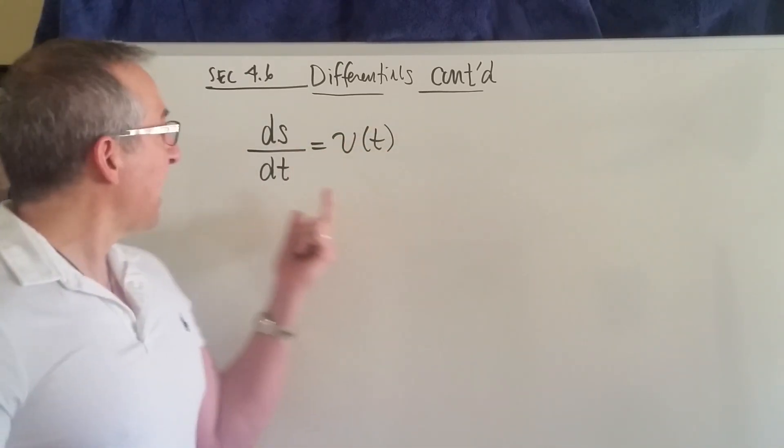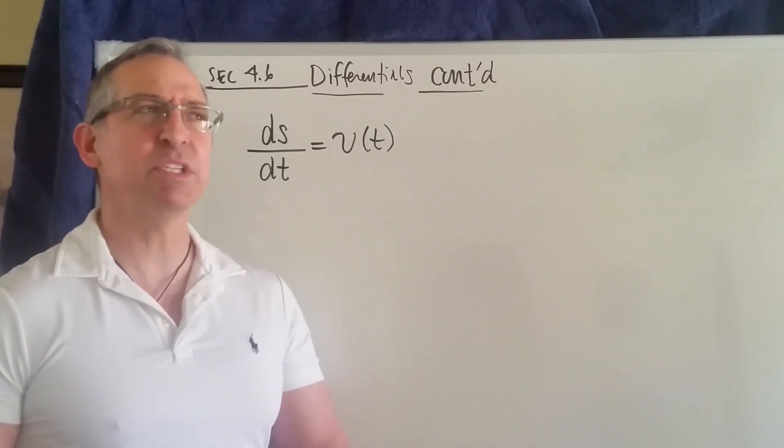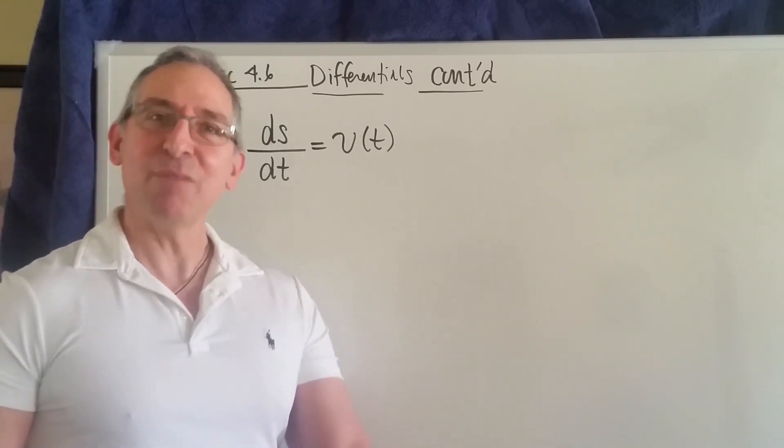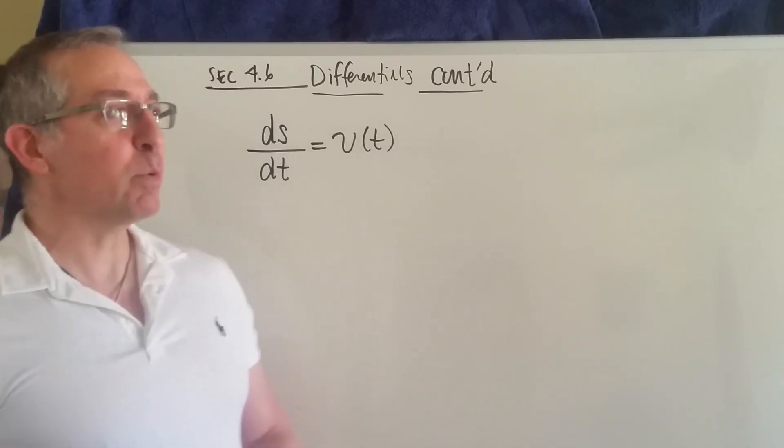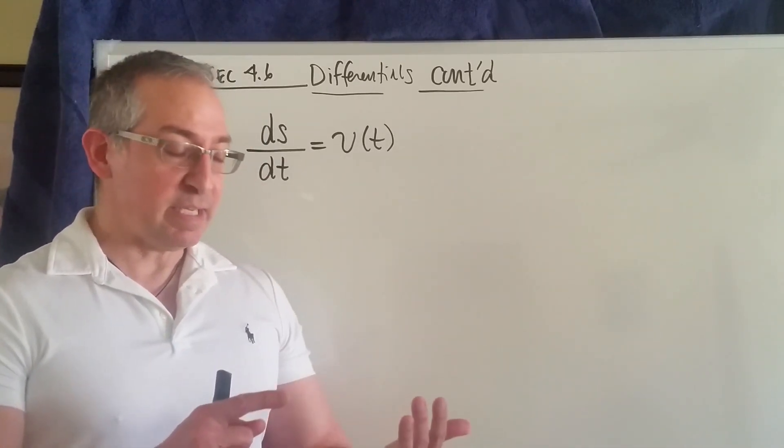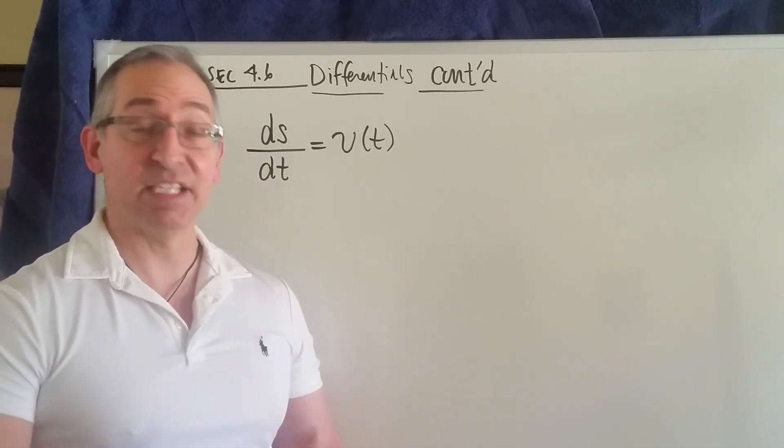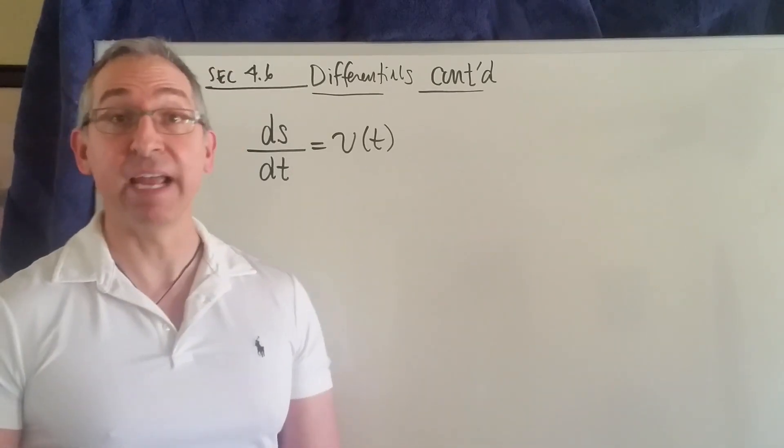Okay, you remember this? That was the time rate of change of the position of an object. Remember, that was back in section 3.6 in our book. That's where we were talking about the position of an object moving in a straight line, what is its velocity, what is its acceleration, when is it moving left, when is it moving right, all that kind of stuff.